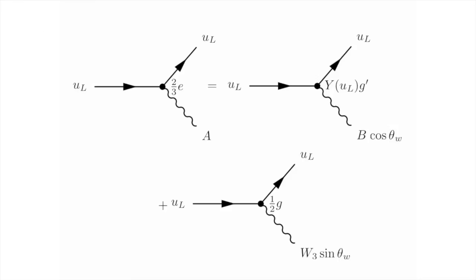Now let's move on to understand what happens in the case of the left-handed up quark. In this case, things are a little bit more complicated because both the B and the W3 interact with the left-handed up. So we can expand out the interaction of the left-handed up with the photon in terms of two terms. One involves the field B times the cosine of the weak mixing angle. The strength is given by the weak charge of the left-handed up, Y of UL, times the strength of the B coupling, G prime. The other term, which is simply summed, involves W3 times the sine of the weak mixing angle. The strength of that coupling is just a half times G.